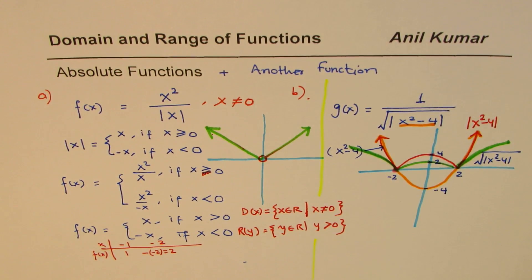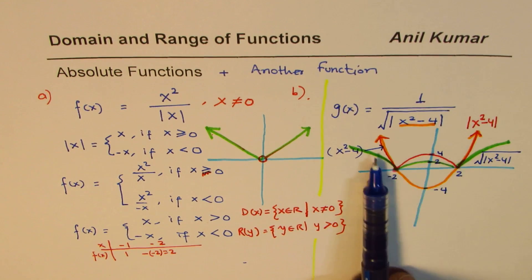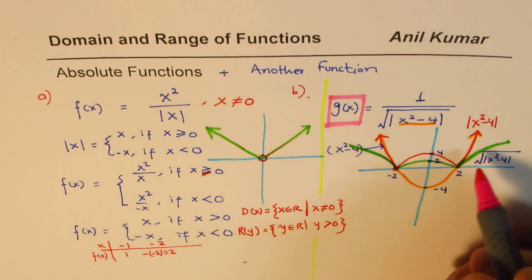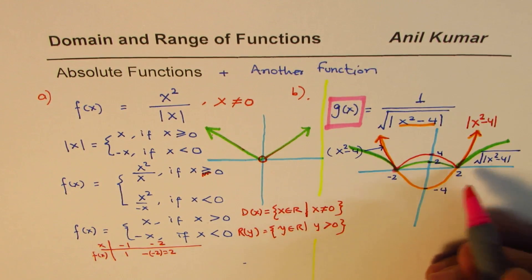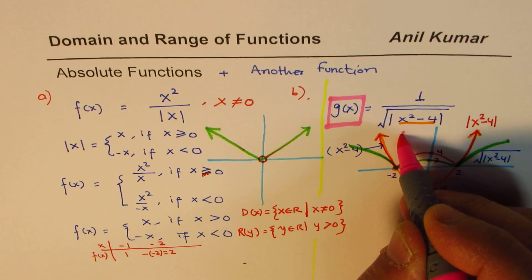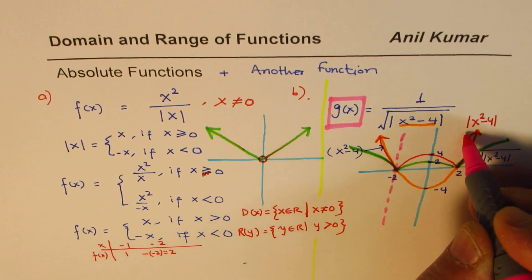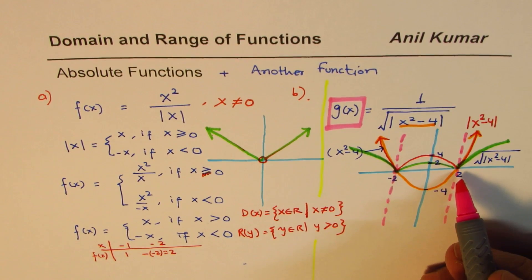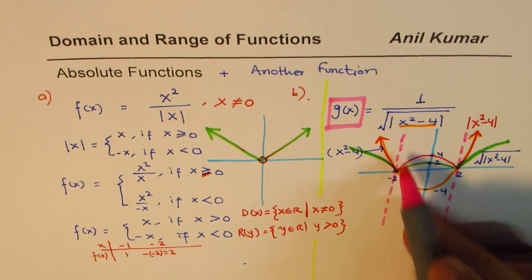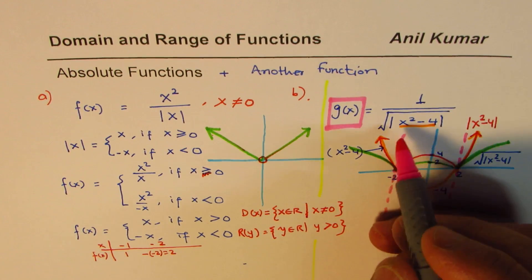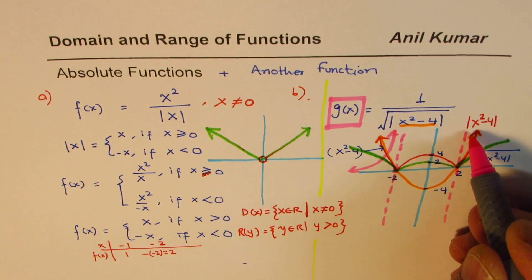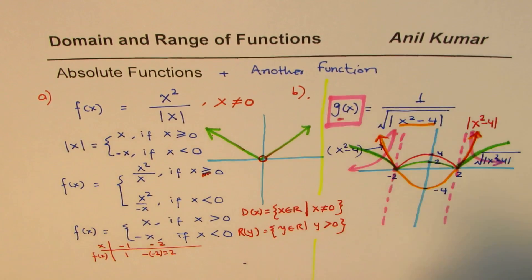We are interested in 1 over this — the reciprocal of the square root function. Now, reciprocal means at the zeros of the square root function (at x = ±2), we'll have vertical asymptotes, since anything divided by zero is undefined. Since the square root values are increasing away from those zeros, the reciprocal graph will decrease — giving branches approaching the asymptotes.